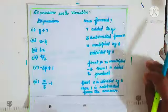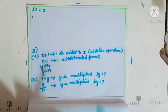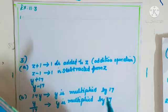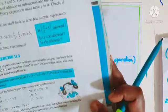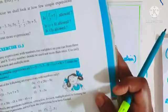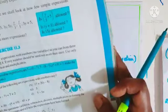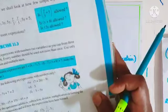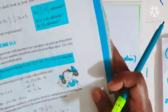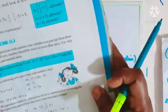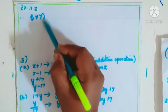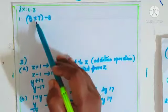Now take Exercise 11.3 from page 233. The question asks: make as many expressions as you can from three numbers — 5, 7, and 8. Every number should be used not more than once. Use only addition, subtraction, and multiplication. So you can write: 5 into 7 minus 8, using multiplication and subtraction.